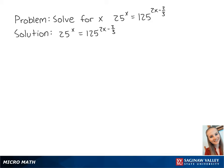For this problem, we want to solve for x in the equation 25 to the x equals 125 to the 2x minus 2 thirds. Using the following property, we want both sides of the equation to share the same base.